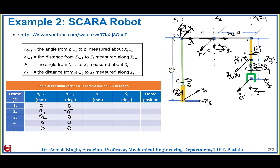The third column is the joint distance Di. D1 is the distance from X0 to X1 along Z1. X1 and X2 are in the same line so D2 is 0. D3 is the distance from X2 to X3 along Z3 — this is a prismatic joint so D3 is variable, not fixed. X3 and X4 are aligned so that distance is 0. Finally X4 to X5 along Z5 gives distance D5.